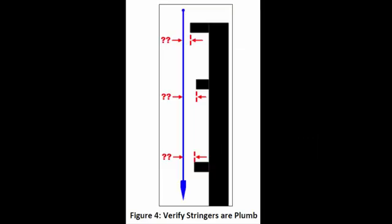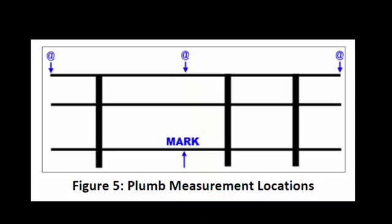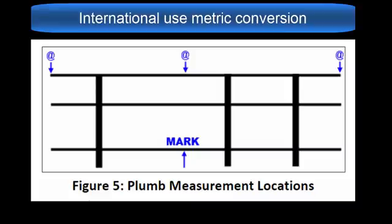To verify front faces of stringers are plumb to each other, hang a plumb bob from above the top stringer so that the string doesn't touch any stringers, and measure from the string to the front face of each stringer. Repeat these steps at both ends and the middle of the stringer. If measurements vary by more than plus or minus one half inch, contact the project manager.